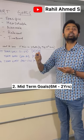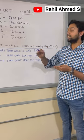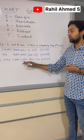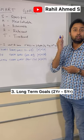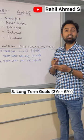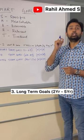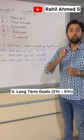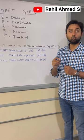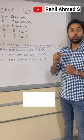The third type of goals are long-term goals. These are the goals that you wish to achieve in a two years to five years time duration. Now, while writing your goals, you can write goals related to health, money, and relationship.